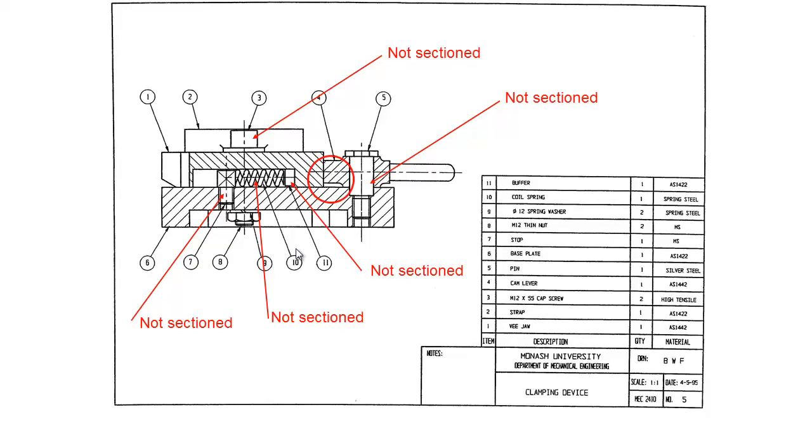So another thing to notice is the difference in hatching between different parts. So we've got here three parts all touching together and you can see we've got different styles of hatching, so different gaps between the hatching and different directions to indicate that we're looking at different parts there.